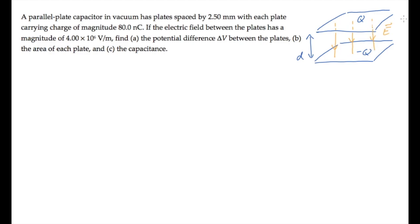Part A asks us to find the potential difference delta V between the plates. If we call this potential difference the potential of the top plate relative to the bottom, we can write the integral this way.